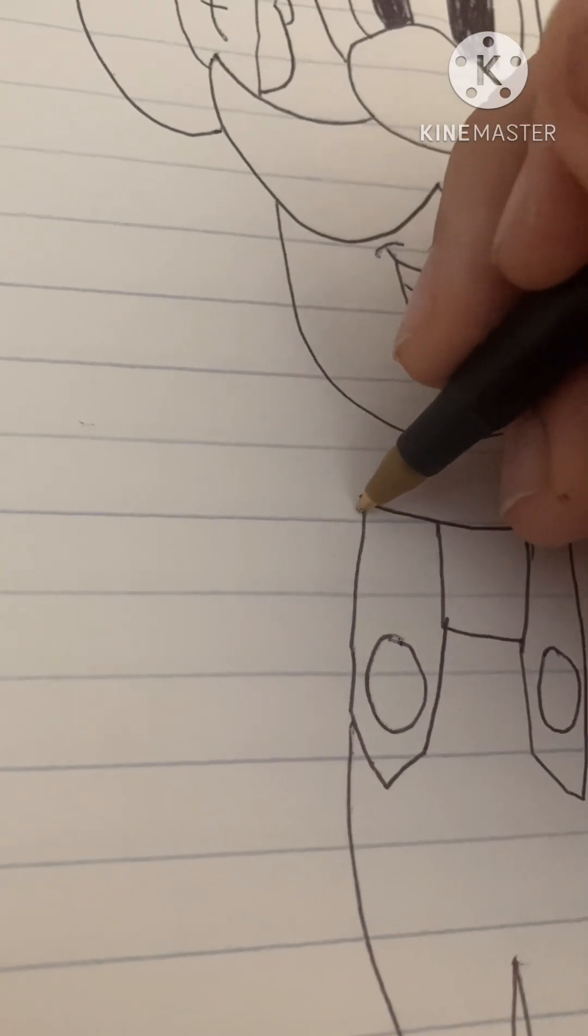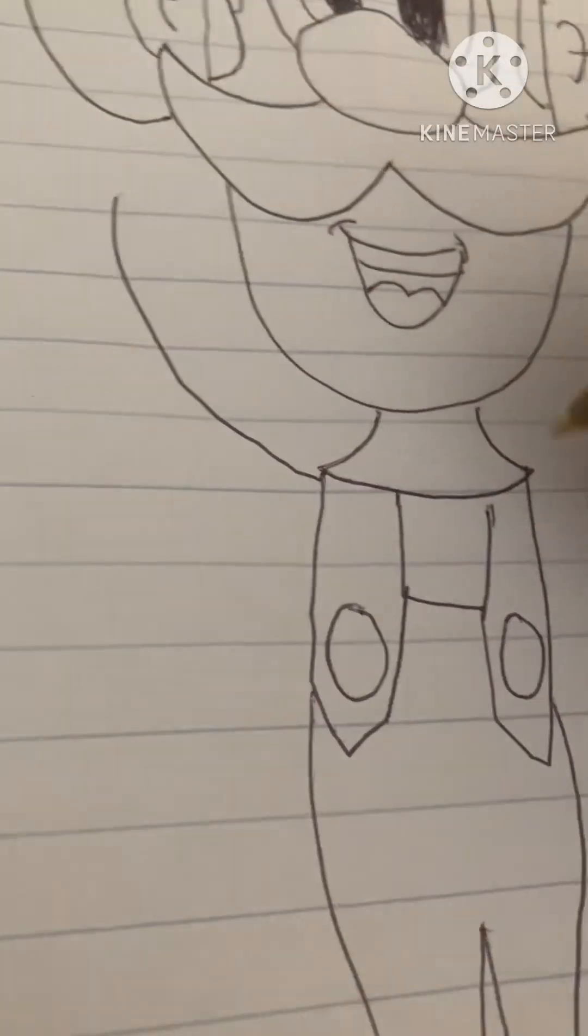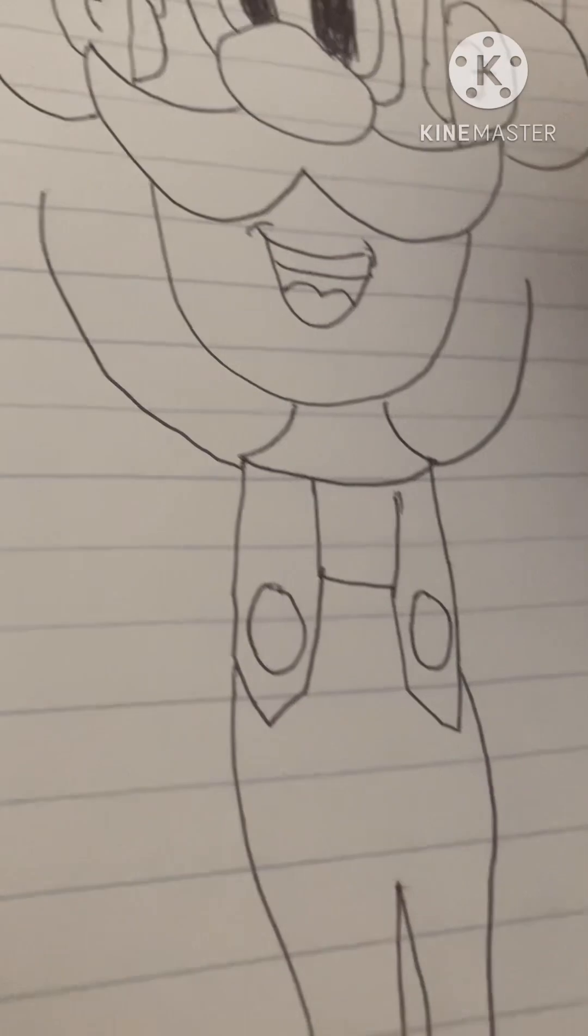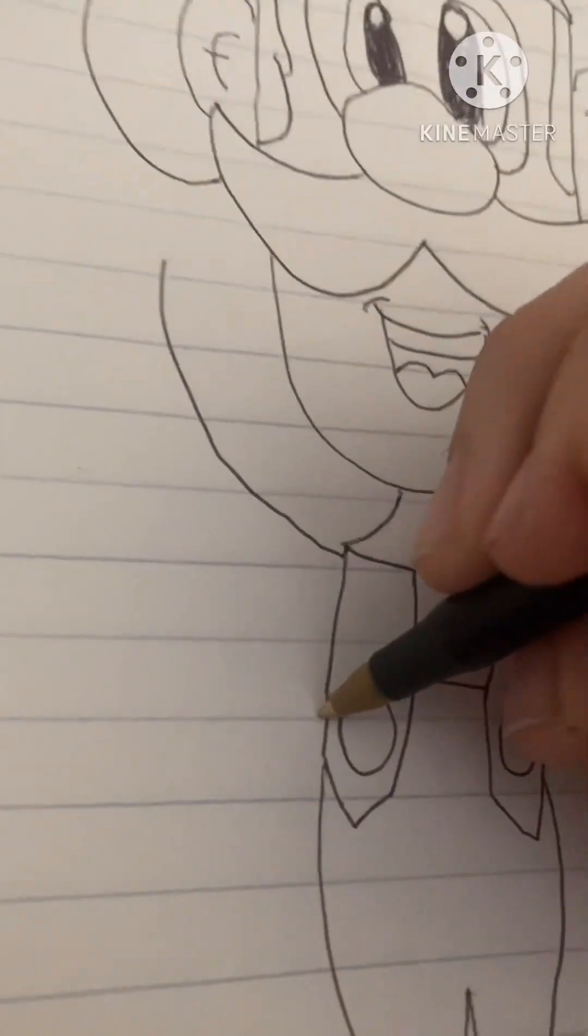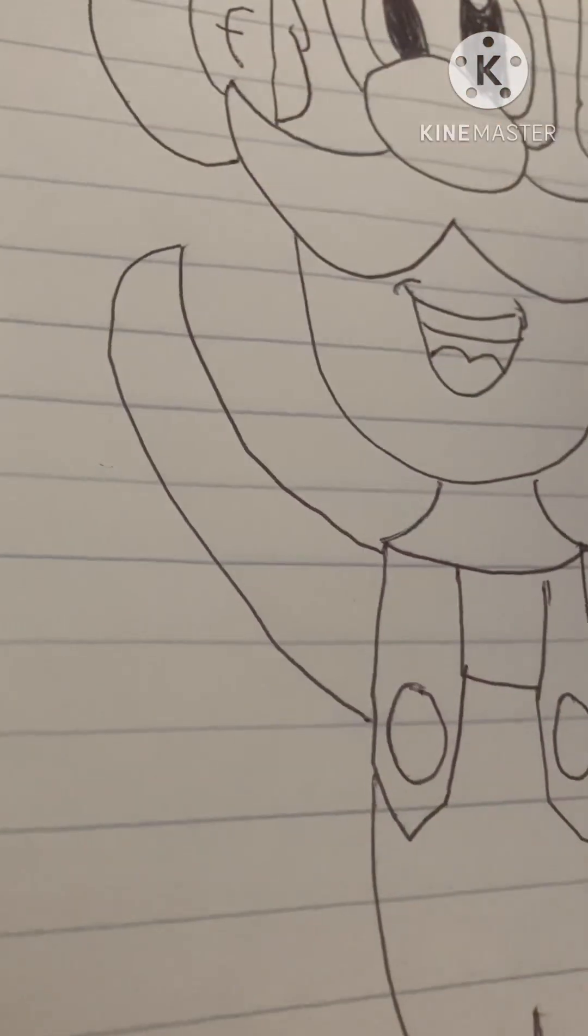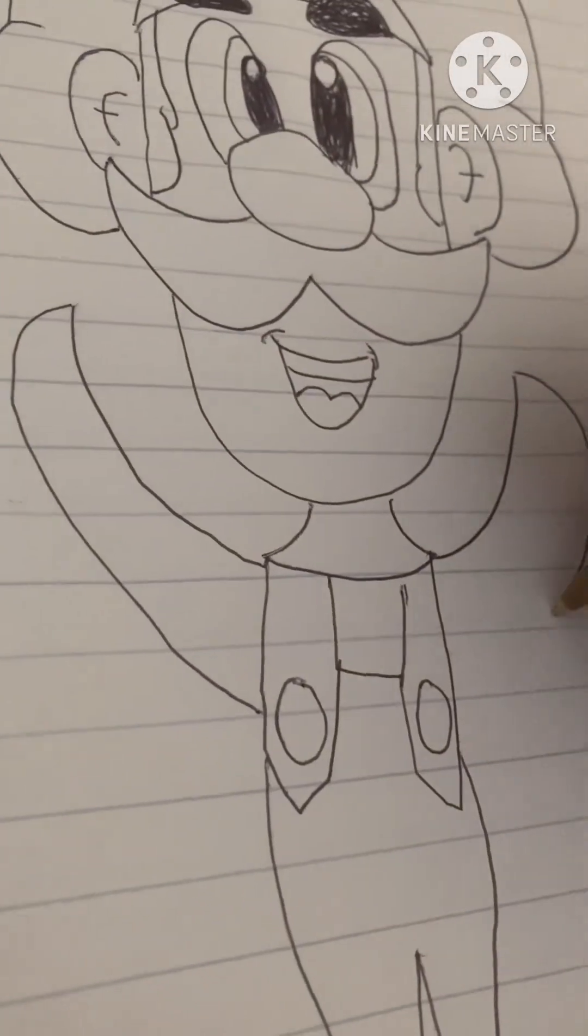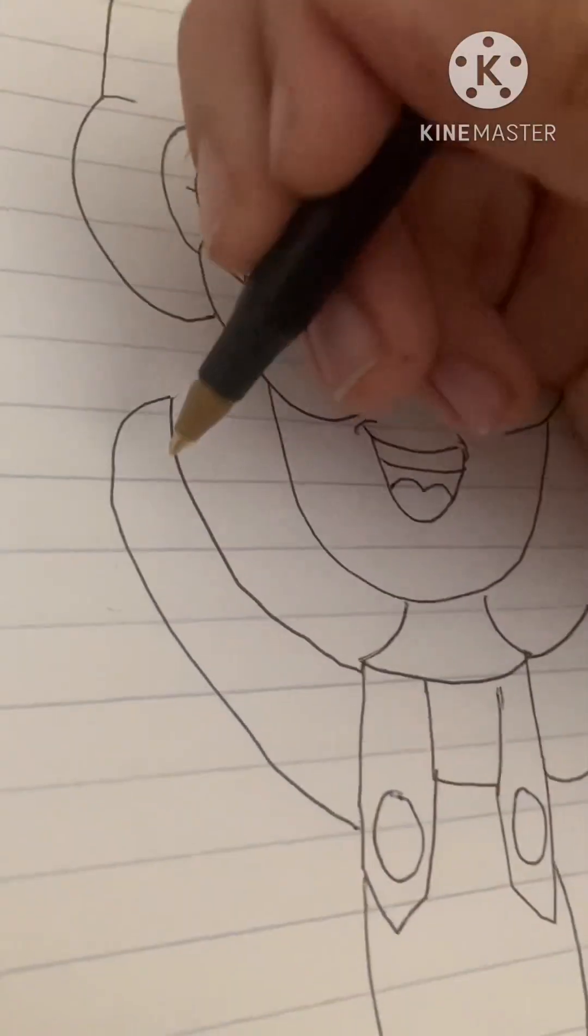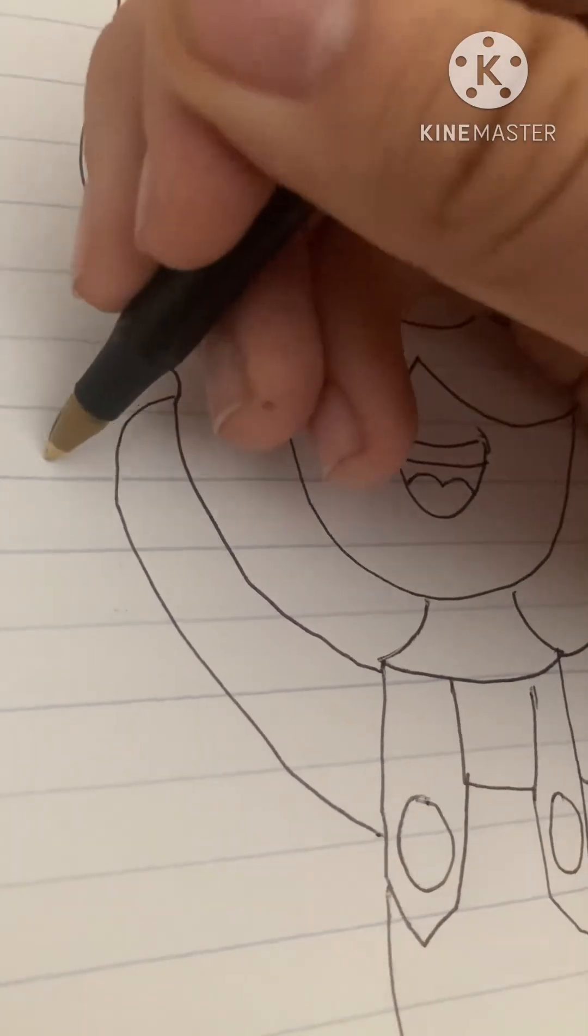Anyways, now what you're gonna do is you're gonna move his arm going up. And another arm going up. And this part is optional. If you want to make him do a different pose, you can do that.